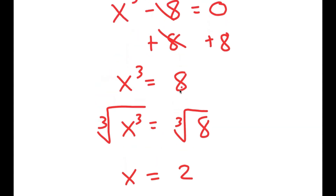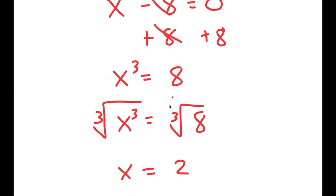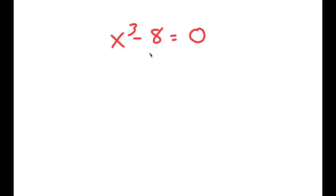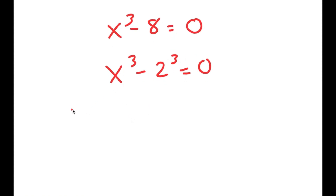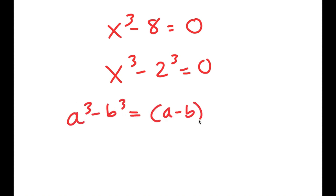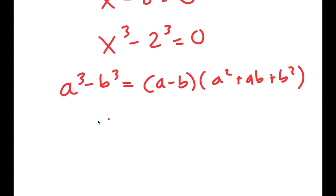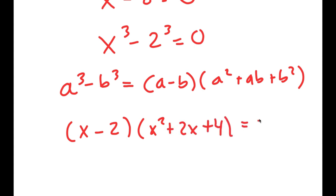But actually, there are more than one solution to this equation. I'm going to rewrite x to the power of 3 minus 8 equals 0, and rewrite 8 as 2 to the power of 3. So I get x to the power of 3 minus 2 to the power of 3 is equal to 0. Using the formula a³ minus b³ equals (a minus b)(a² plus ab plus b²), this turns into (x minus 2)(x squared plus 2x plus 4) is equal to 0.